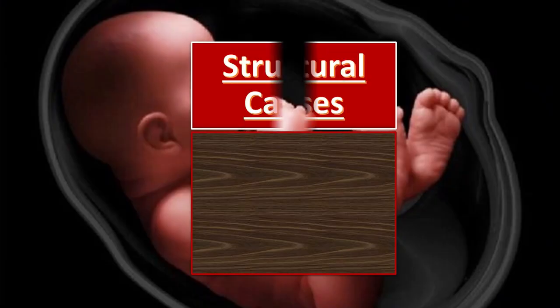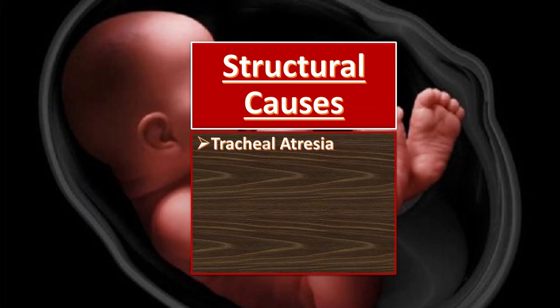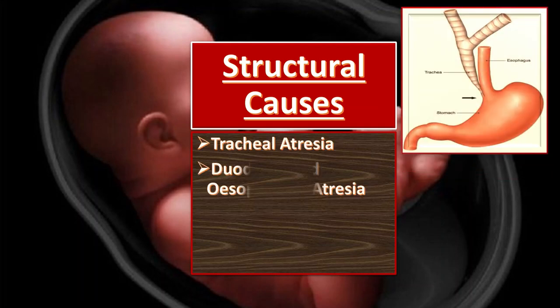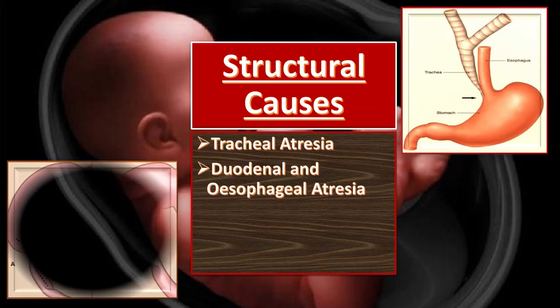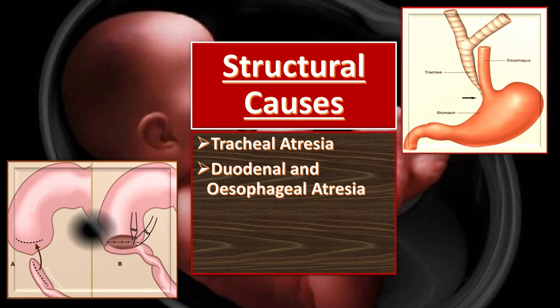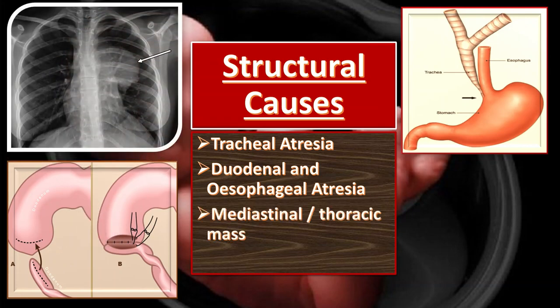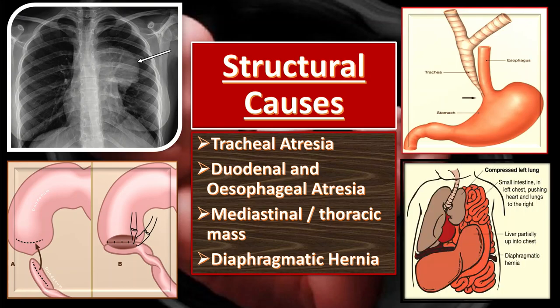The structural causes of polyhydramnios include tracheal atresia, duodenal and esophageal atresia, mediastinal and thoracic mass, and diaphragmatic hernia.